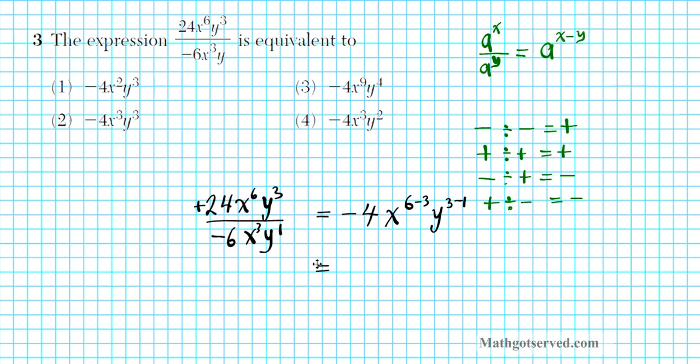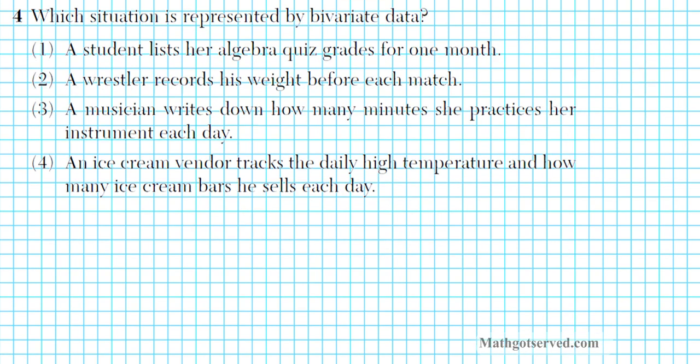Always keep your resulting exponent in the position of the exponent with the bigger degree. So this is a nice situation because the terms with the bigger degrees are upstairs here on numerators. That's why we end up with everything as numerators. So let's simplify this. We'll have negative 4x to the 3rd y to the 2nd power. And we can clearly see that our answer is option number 4.